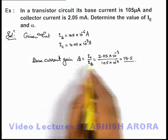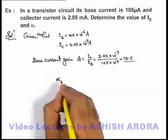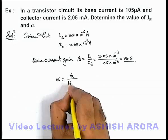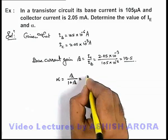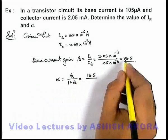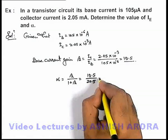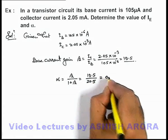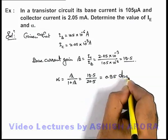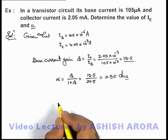Now that we know the value of base current gain beta, the emitter current gain alpha can be written as beta upon one plus beta. Substituting the value: nineteen point five divided by one plus nineteen point five, which is twenty point five. On calculation you get alpha as zero point nine five, which is the answer to this problem.